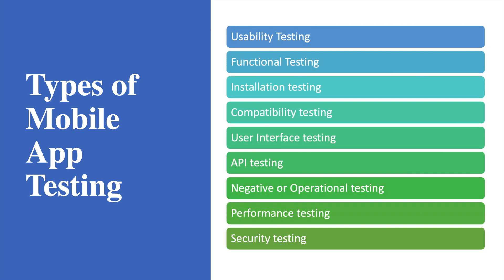Now let's look at the types of mobile app testing you need to include in your test plan. First is usability testing — mobile has a very small screen and users have limited interactions like swiping or tapping. You need to consider how feasible and easy the screen is to use. No matter how good your application is or how much functionality you implement, if users find it complex, your app won't succeed.